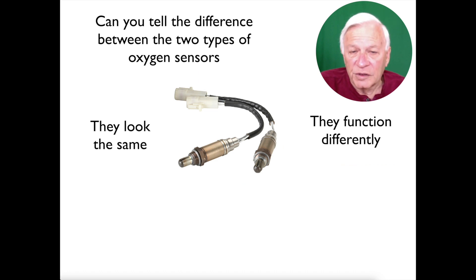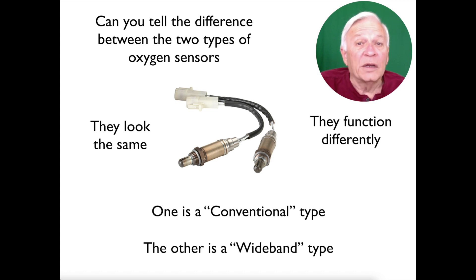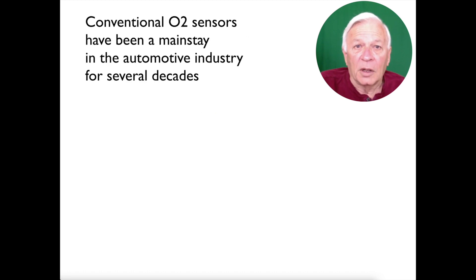Can you tell the difference between these two types of oxygen sensors? Well, they look the same, right? But they do function differently. One is a conventional type and the other is a wideband type. Conventional O2 sensors have been the mainstay in the automotive industry for decades.